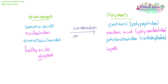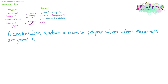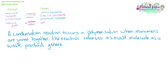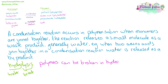Going from monomers to polymers is a condensation reaction, and going the other way from polymers to monomers is a hydrolysis reaction. A condensation reaction occurs in polymerization when monomers are joined together — this reaction is going to release a small molecule as a waste product, and this is generally going to be water. For example, joining together two amino acids in a condensation reaction, water is going to be released as a byproduct. Looking at the makeup of the word hydrolysis, hydro is water and lysis is break. Polymers can be broken in a hydrolysis reaction, and water is needed to be added to break that bond.